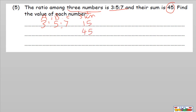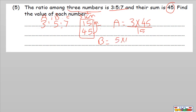Find the value of each number. From the numbers, we do multiply and divide. So A equals 3 by 45 divided by 15, B equals 5 by 45 divided by 15, and C equals 7 by 45 divided by 15. The first one is 9, the second is 15, and the third equals 21.